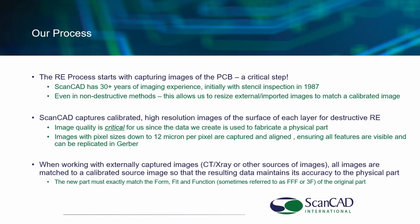Whether a destructive or non-destructive method is used, we always start by capturing an image of the surface of the PCB on our calibrated system. If there's no physical board available, we're able to start the process by referencing any called-out dimensions on data sheets, and then we resize the resulting Gerber data to match those dimensions. And if x-ray images are used, the images themselves are resized to match a scan of the physical board, so that each and every layer of the circuit board is dimensionally accurate.